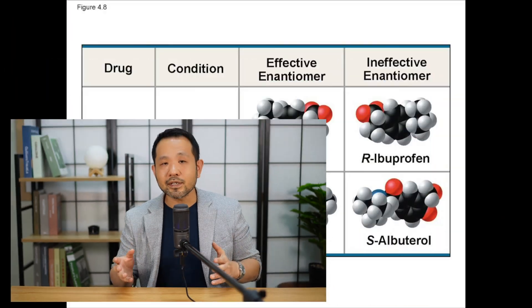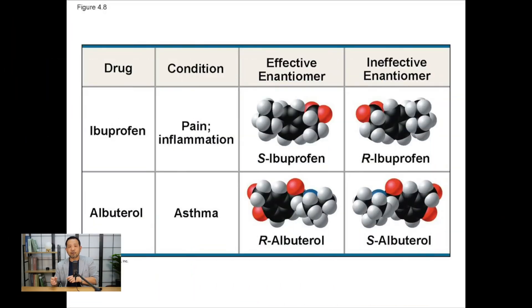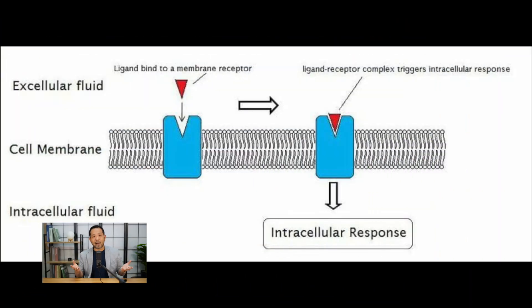AP Biology really likes enantiomers because of their pharmaceutical applications. Drugs like ibuprofen or albuterol work with one form while the other half doesn't work at all. This comes down to form and function — think of molecules as keys unlocking a lock, the lock being a receptor on one of our cells. A mirror-image copy of a key will never open the lock the original was intended for; the wrong enantiomer simply won't match the receptor.